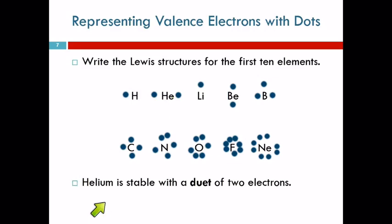So helium is stable with a duet of two electrons. Helium and hydrogen are the little baby brothers of the element family, right? And so there are exceptions to a lot of things. They can't handle eight valence electrons, so they don't even try. They're good with two. Their standards are low.